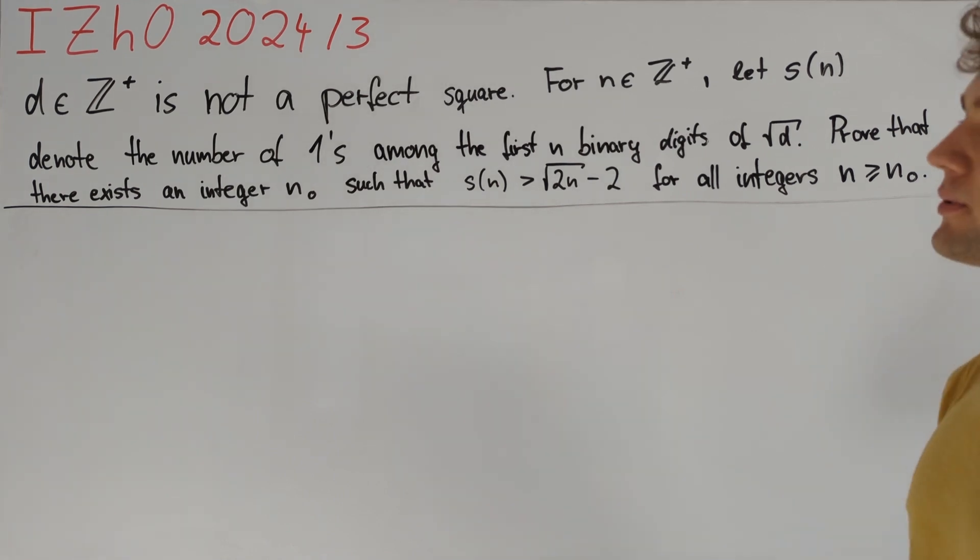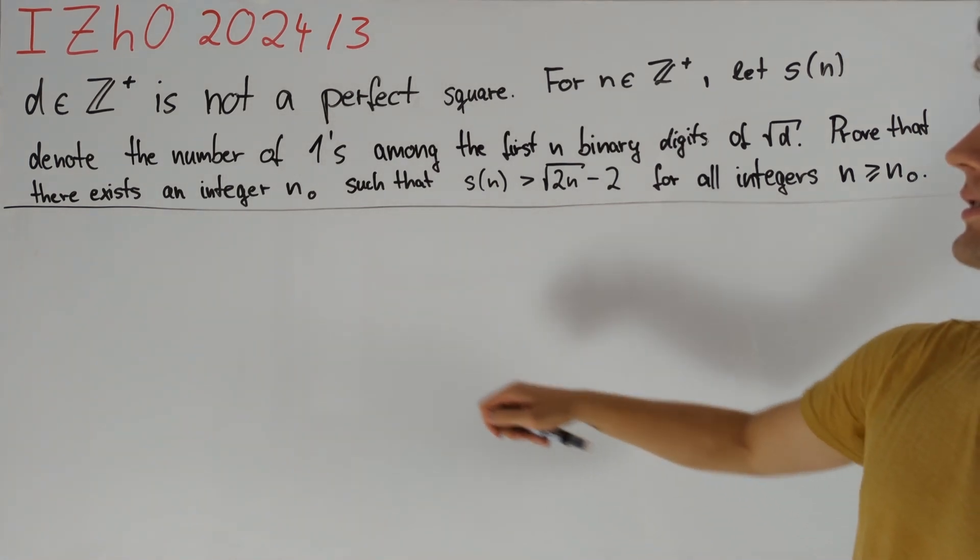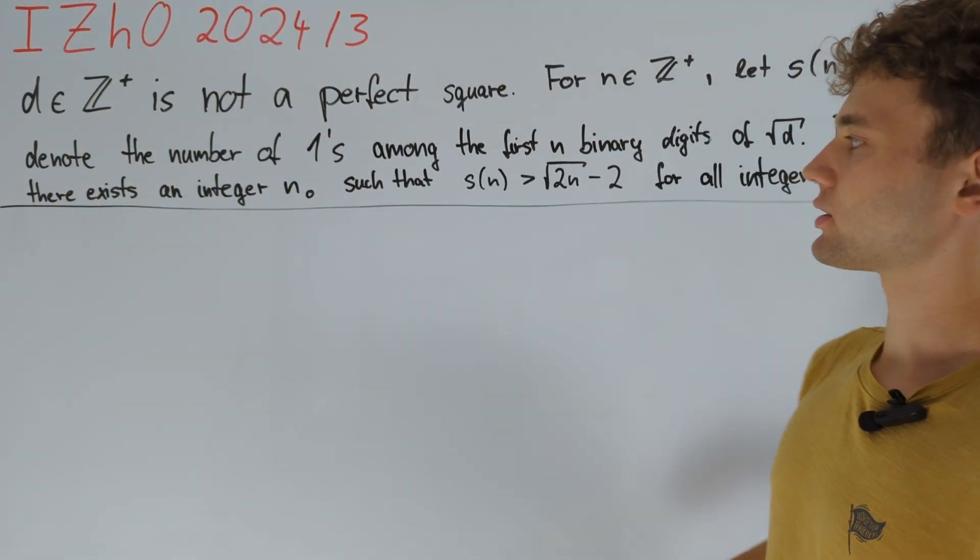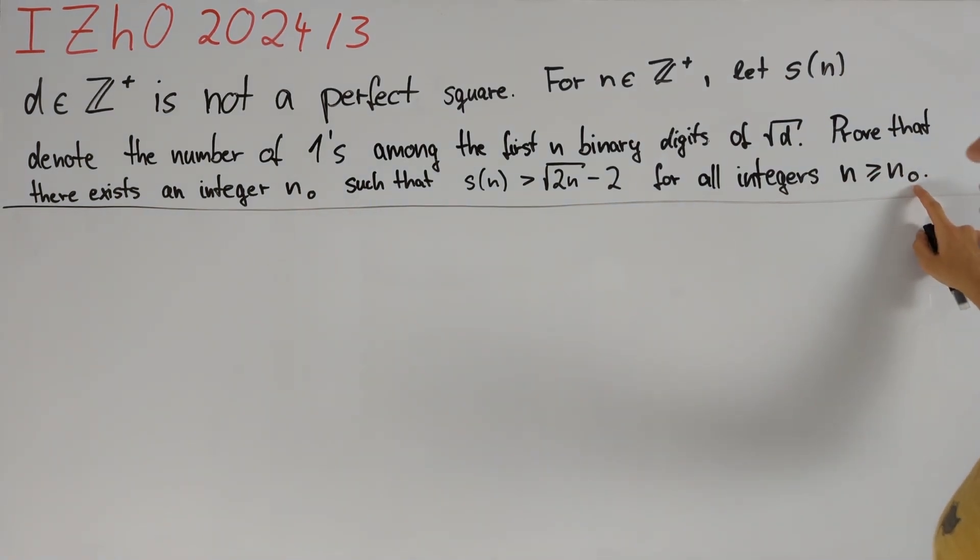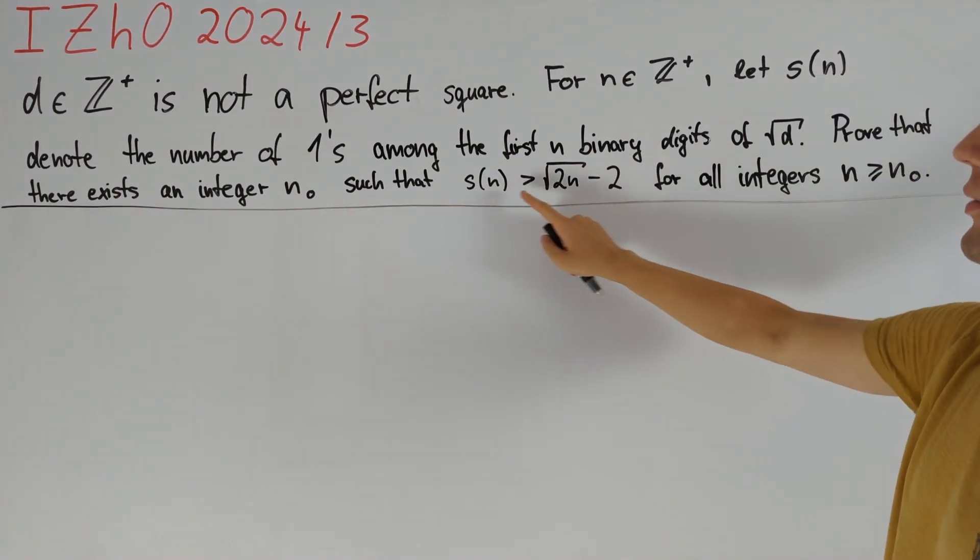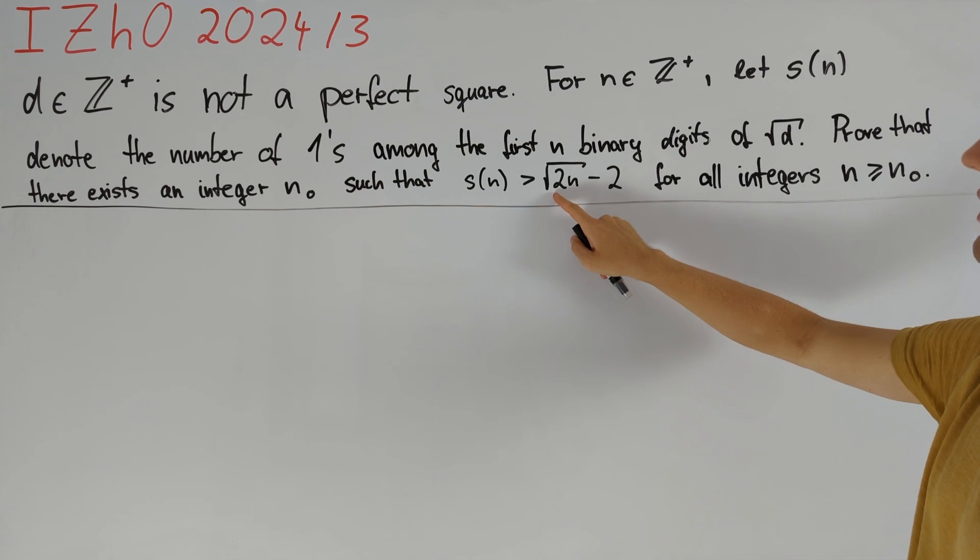We are asked to prove that there exists an integer n₀ such that for any n greater than or equal to n₀ we have s(n) greater than square root of 2n minus 2.